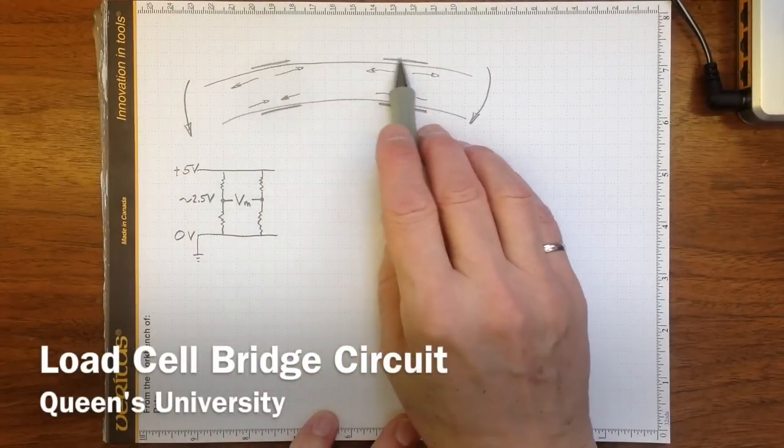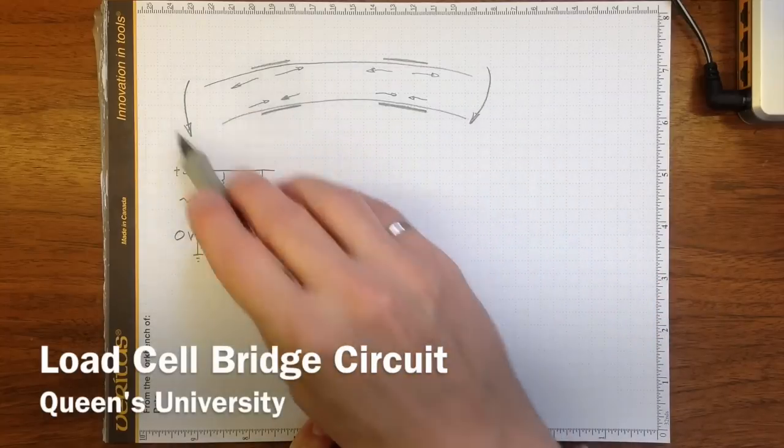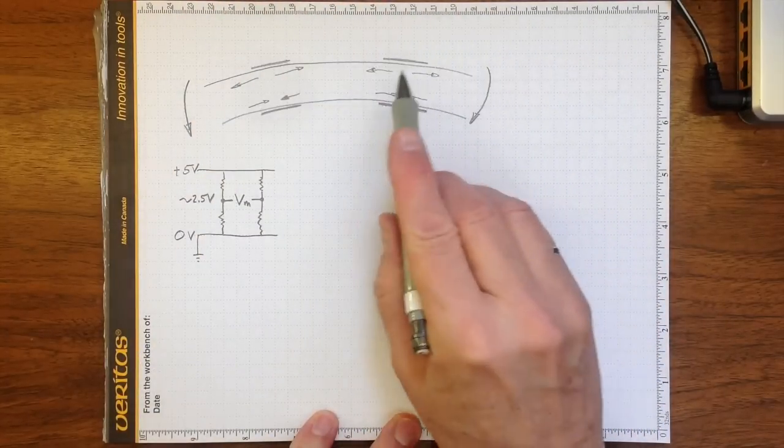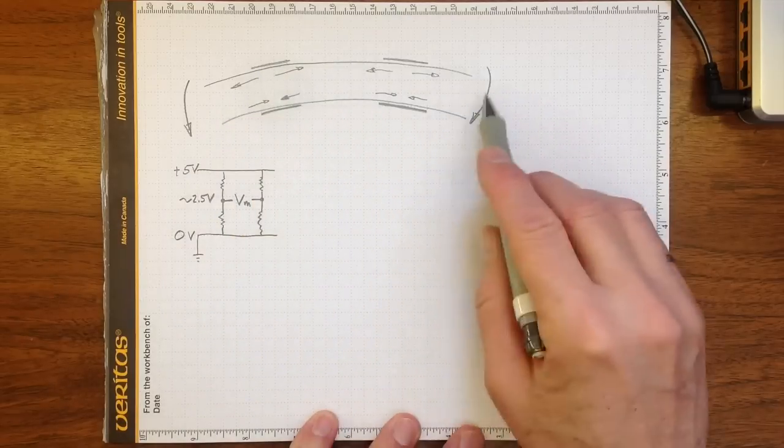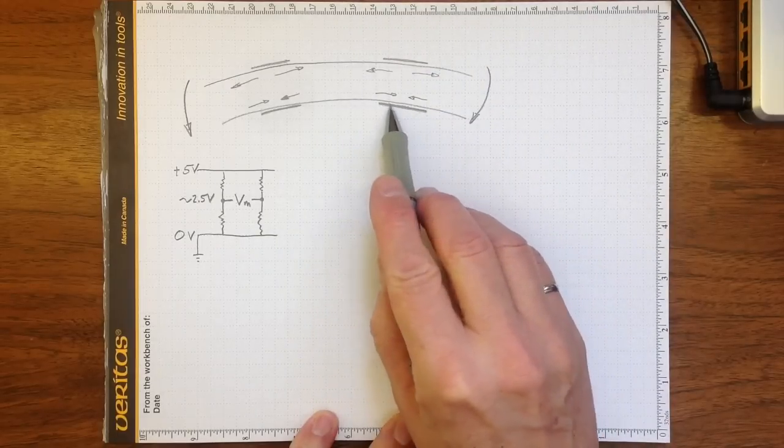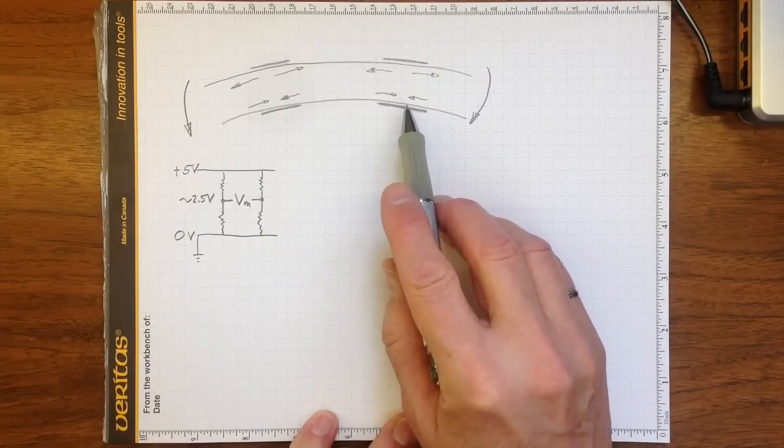If I put some strain gauges on a beam and then bend the beam, the ones on top, the ones that are going to be in tension, will be stretched out. On the bottom the beam is pushed together and likewise the strain gauges on the bottom are pushed together.